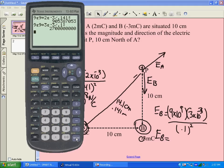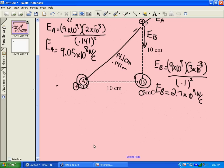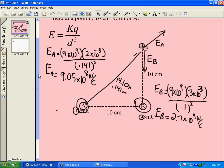Okay, so 2.7 times 10 to the 9 newtons per coulomb. So now what we have, we have two different vectors that we have to add together. EA, this one on the angle here, is 9.05 times 10 to the 8. And this guy that's straight down is 2.7 times 10 to the 9. Okay, we'll squeeze it right in there.